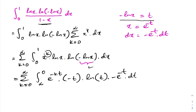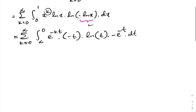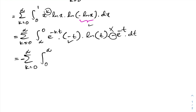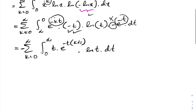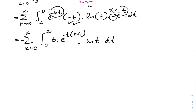We simplify. We interchange the lower and upper limits, which cancels the minus sign. We also have a minus sign from the substitution, so we get the sum from k equals 0 to infinity of the integral from 0 to infinity of t times e to the minus k times t, times e to the minus t. Factoring, we get e to the minus t times (k plus 1), times natural log of t, dt.